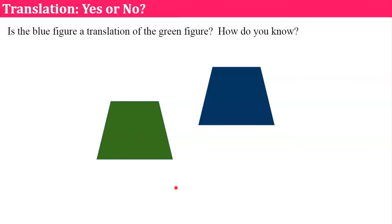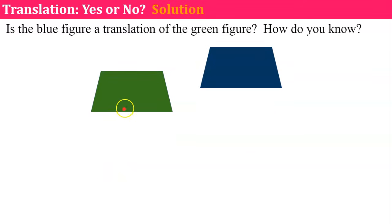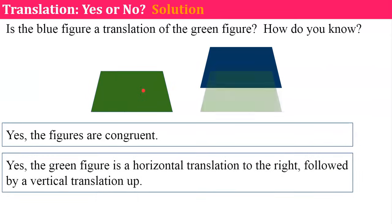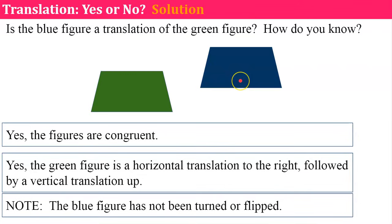Given all those vocabulary words, what do you think? Is this blue figure a translation of the green figure? And how do you know? We're going to look at it and the figures are congruent. I can slide the blue figure on top of the green figure and it lines up perfectly. The green figure could be horizontally translated to the right and vertically up. So I can slide and slide. And there's my translation. I haven't turned, flipped, or rotated. And it's not changed in size. So seeing as all of these things hold true, it is a translation.